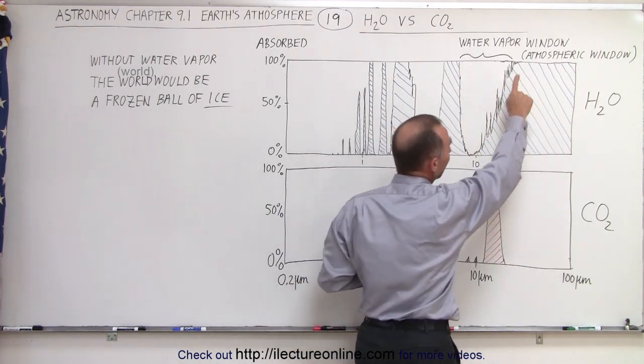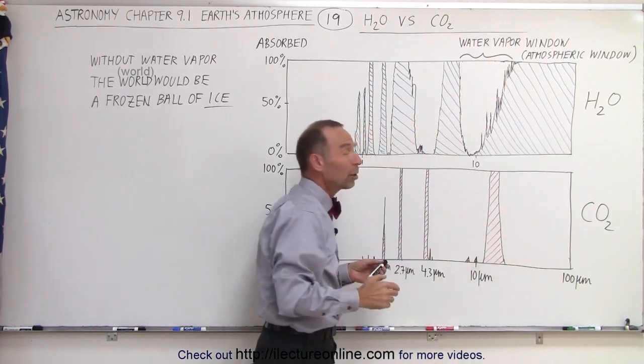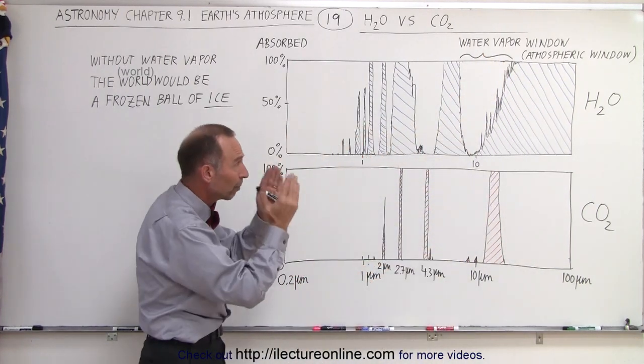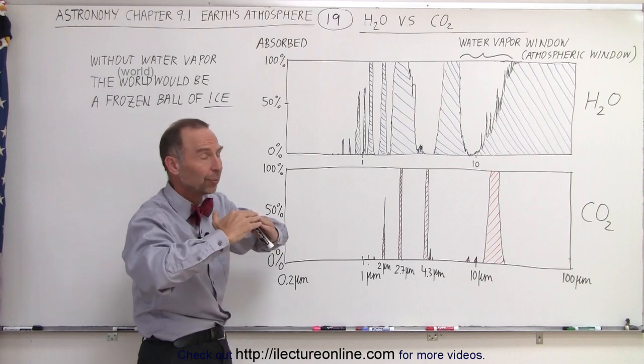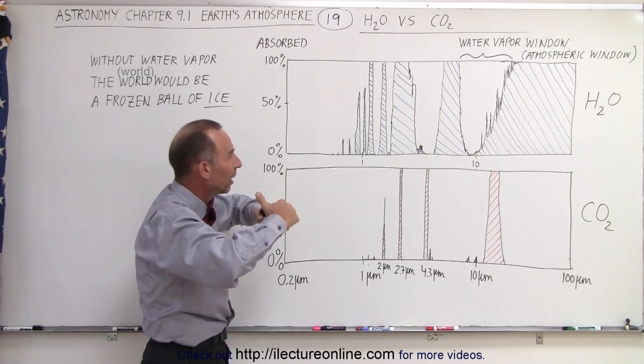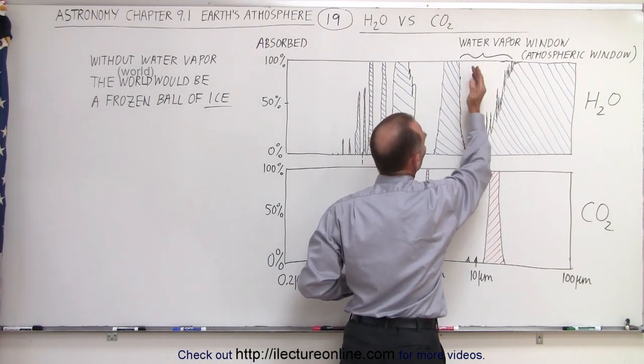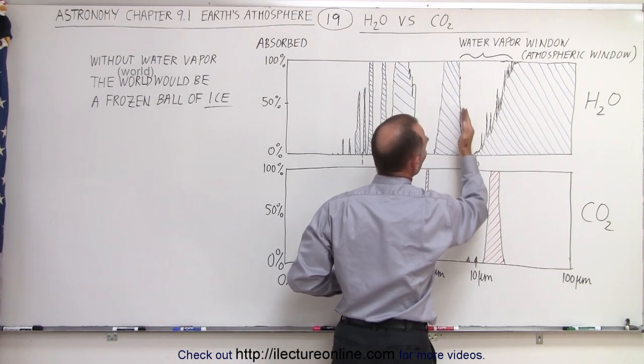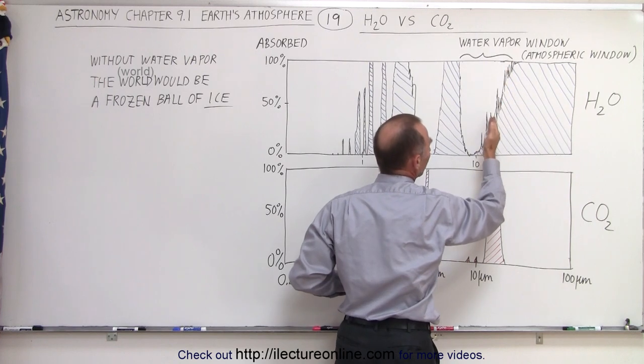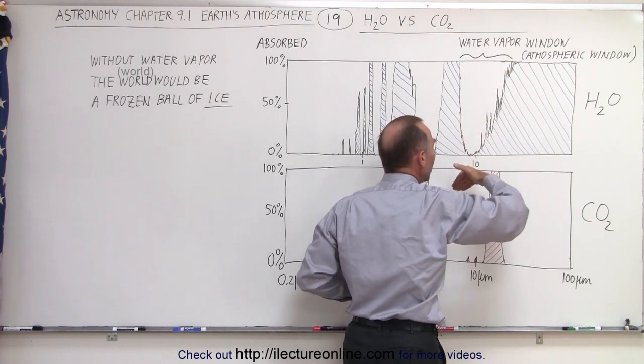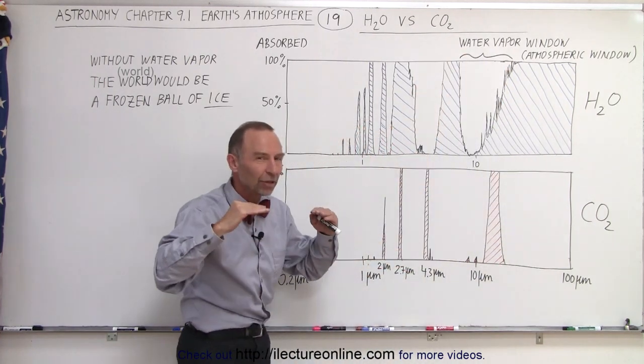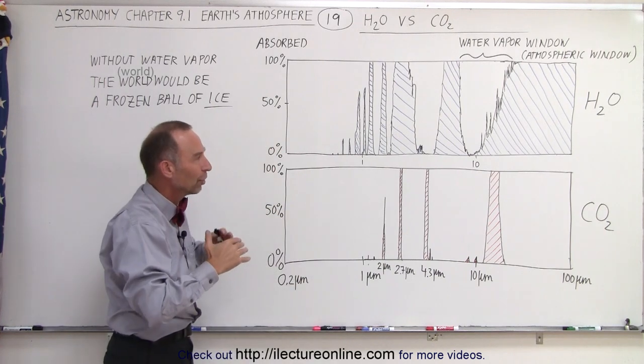That's called the atmospheric window or we can simply call it the water vapor window. This is the portion of the radiation coming from the earth—the infrared radiation—that does readily make it to space, especially in this band right here. Virtually all of it makes it to space, and here there's a partial absorption on this side and a partial absorption on this side, so together enough radiation gets to space to keep the earth at a particular temperature that is fairly comfortable for us right now.